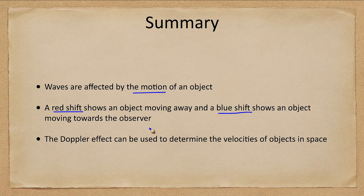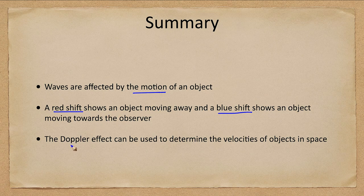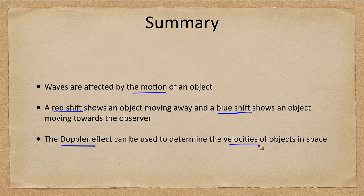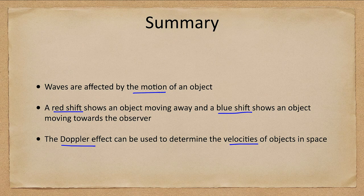And do remember, even though I state it that way, it could very easily be the observer moving toward the object or the observer moving away from the object. And we can use the Doppler effect to determine the velocities of objects in space, at least their velocity, the component of their velocity, either toward or away from the observer.